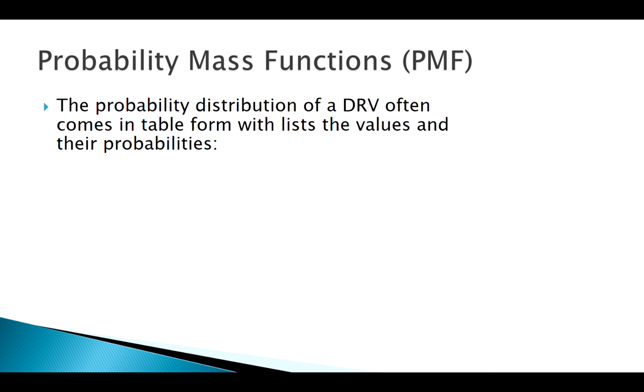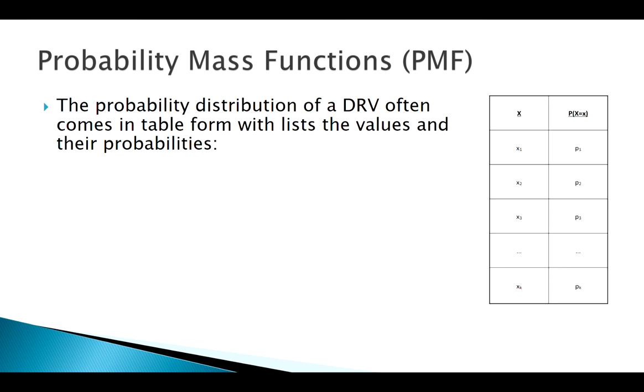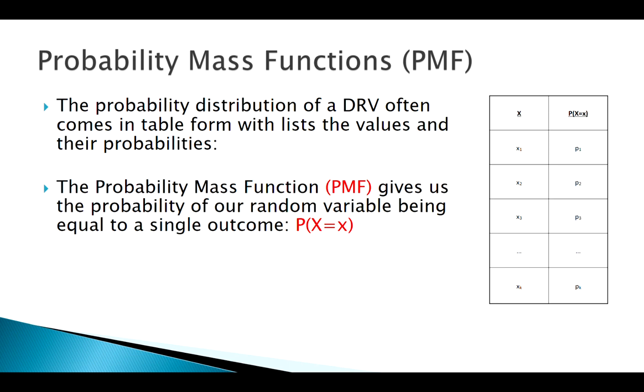Your probability mass function is the probability of X being equal to exactly and only one specific value. Lots of times we have it listed in a table like this—each potential value and its corresponding probability. So this is our PMF, probability mass function.